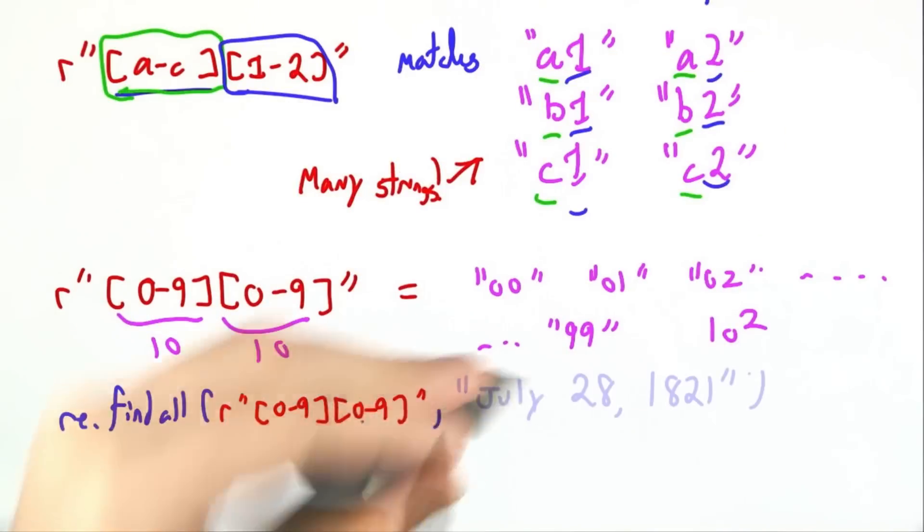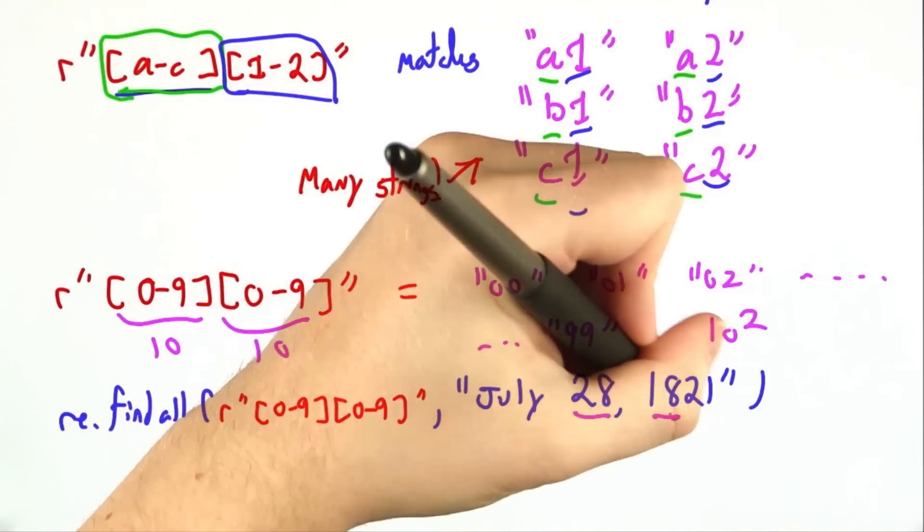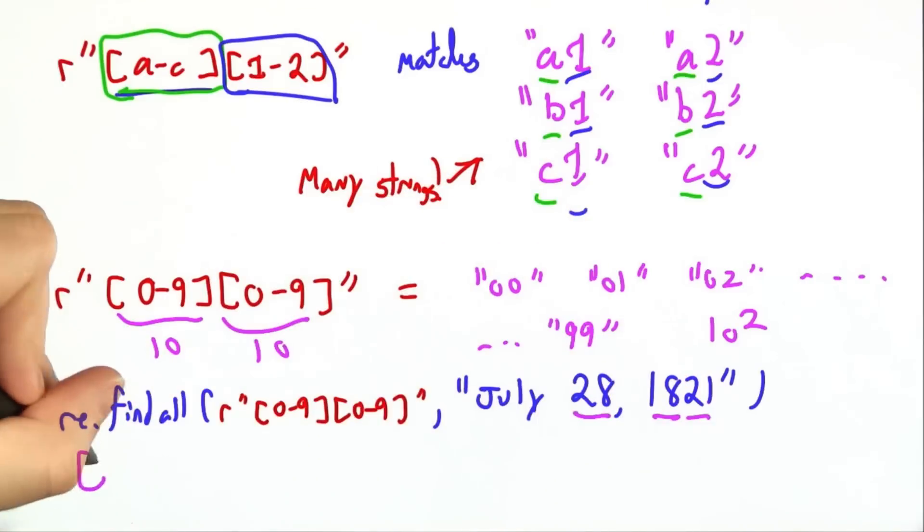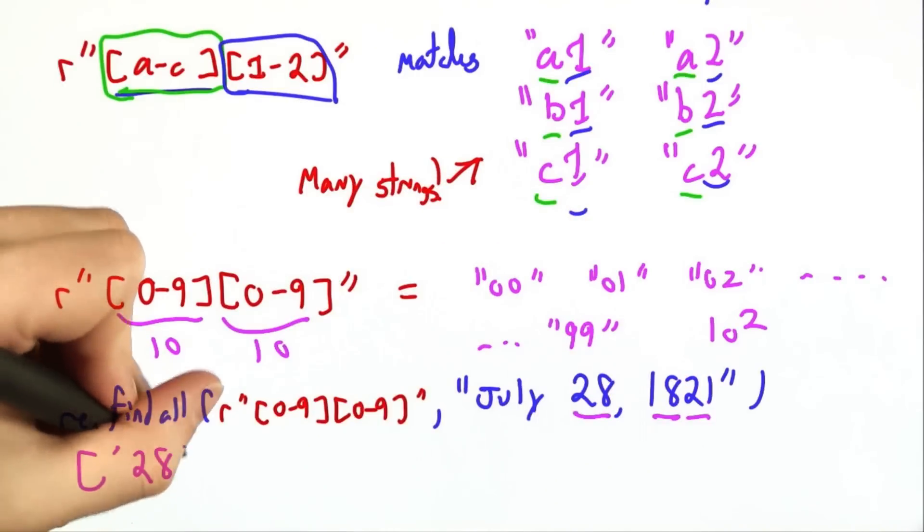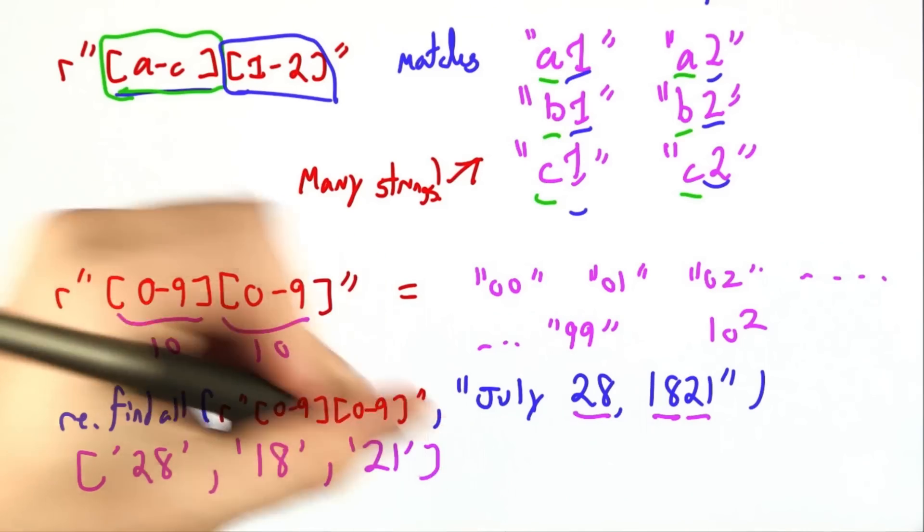So let's look for a two-digit number in the string July 28, 1821. Here's a two-digit number, here's a two-digit number, and here's another one. So we'll end up getting 28, 18, and 21.